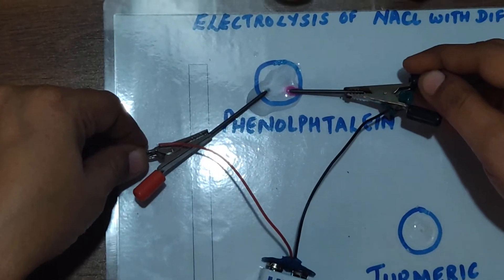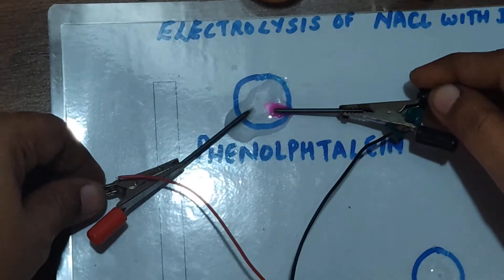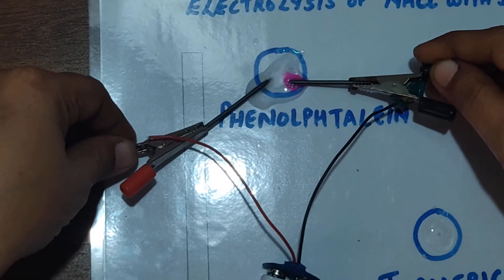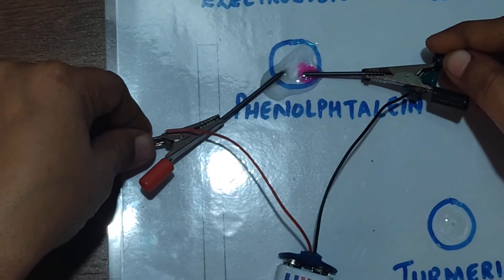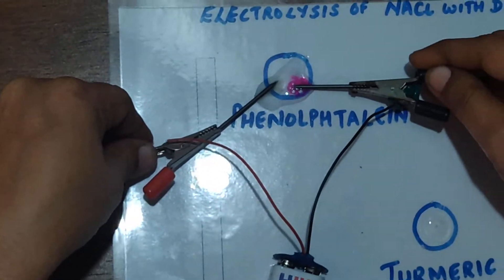See, you can beautifully see the bubbles and the pink color at the negative electrode. At the negative electrode, pink color appears because hydrogen ions are reduced to gaseous hydrogen.